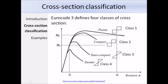Here is a diagram showing the four behavioural classes as defined by Eurocode 3. Class 1 cross-sections can reach and maintain their full plastic moment in bending and can be used in plastic design. Class 2 sections also reach full plastic moment but have limited rotation capacity compared to class 1. Class 3 sections do not reach their full plastic moment; their bending moment resistance is limited to the elastic yield moment. Class 4 sections fail by local buckling in the elastic range.